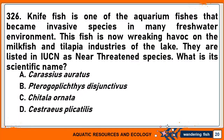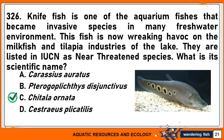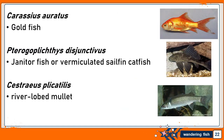Knife fish is one of the aquarium fishes that became an invasive species in many freshwater environments. This fish is now wreaking havoc on the milkfish and tilapia industries of the lakes, and is listed in IUCN as a near-threatened species. What is its scientific name? A. Carassius auratus. B. Pterygoplichthys disjunctivus. C. Chitala ornata. Or D. Cystorhinus placidus. The correct answer is C. Chitala ornata. Carassius auratus is goldfish; Pterygoplichthys disjunctivus is janitor fish or vermiculated sailfin catfish; and Cystorhinus placidus is river-lobed mullet.